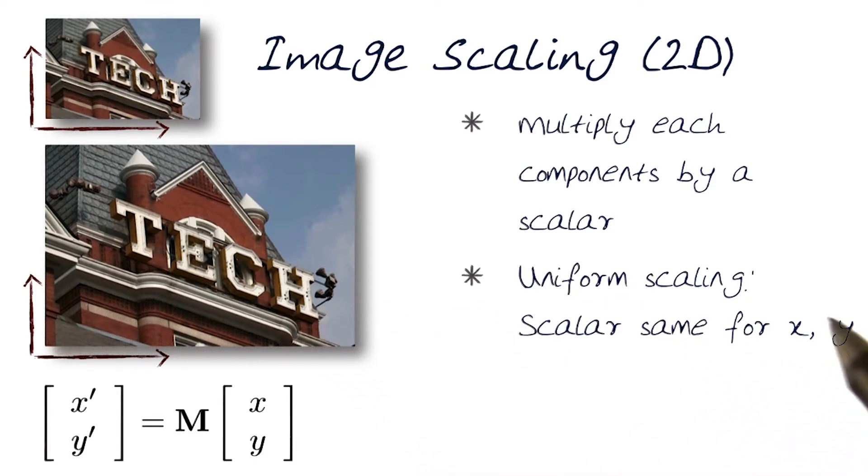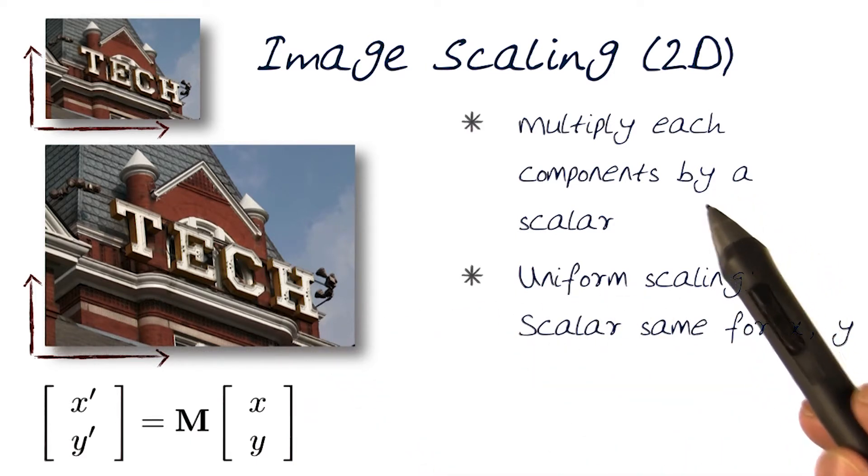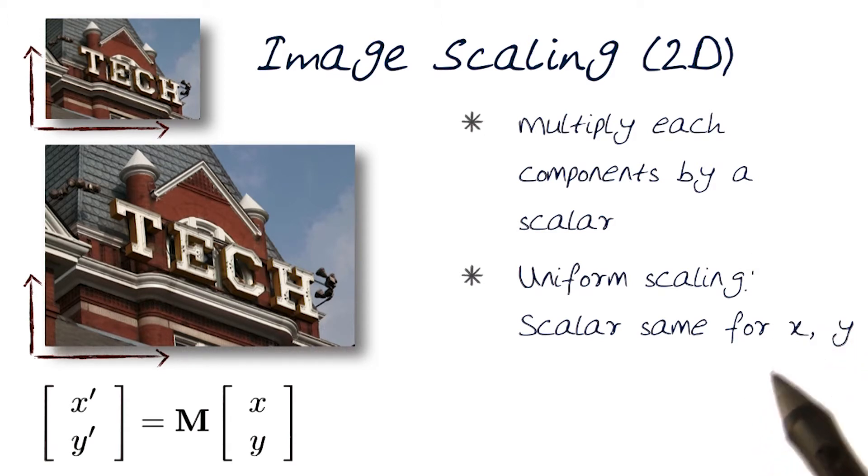So similarly, different aspect ratios would come in. So uniform scaling would only be when I apply the same constant both ways. If I apply different ones in x and y directions, that would actually allow me to now have different aspect ratios.